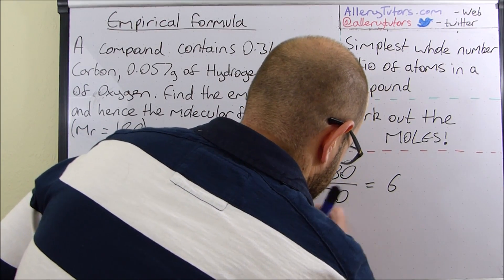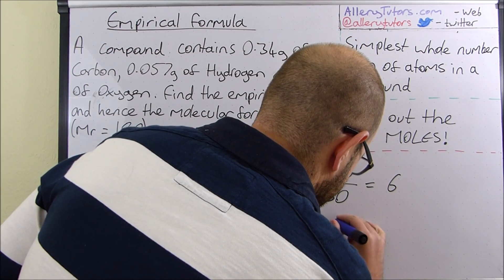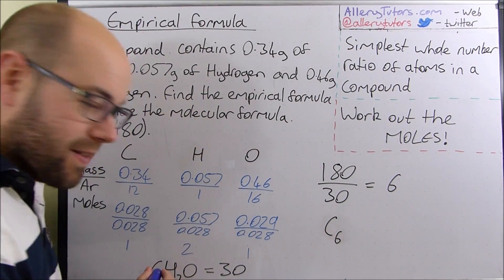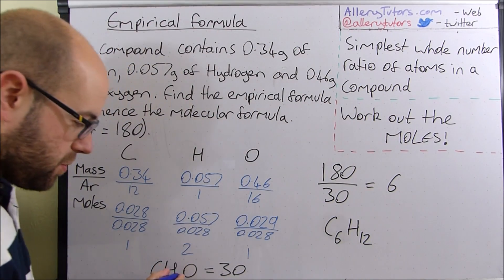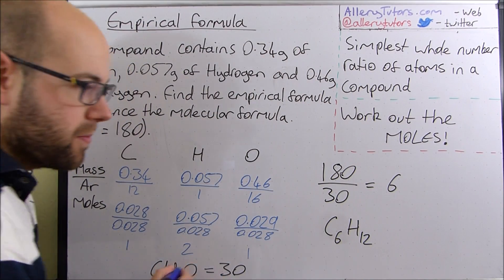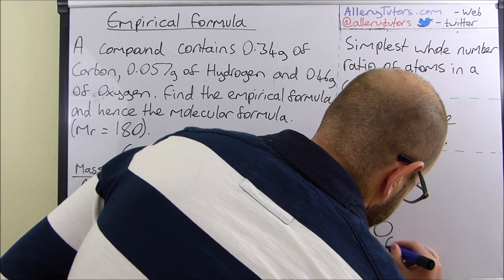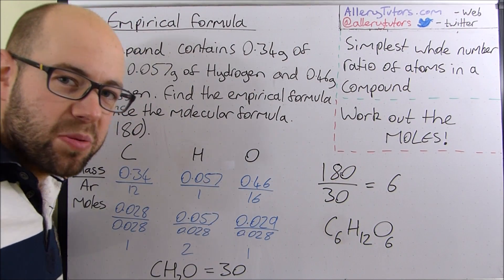C6 which is 6 carbons, H12 because we've got two hydrants so 2 times 6 is 12 and then we've got O6. C6 H12 O6.